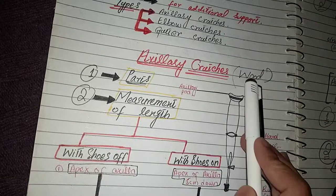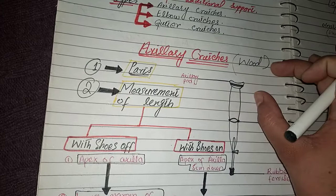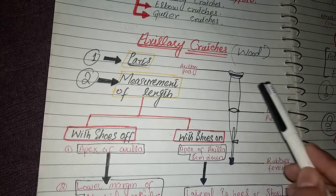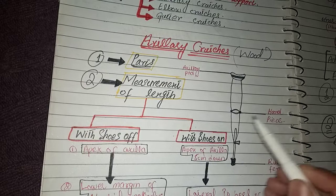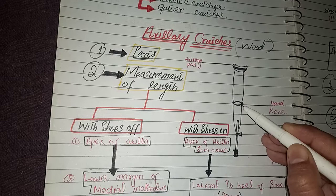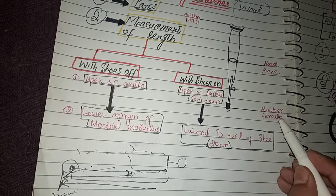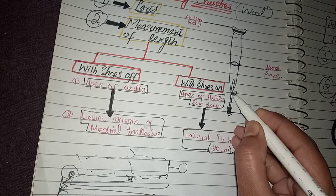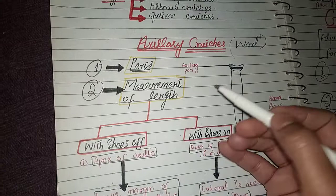First we learn about axillary crutches. Axillary crutches are made of wood. There are different parts of axillary crutches. At the top there is an axillary pad, then a handpiece, and the length is adjusted through this handpiece. There is a metal clip, and at the end there is a rubber ferrule. The length is also adjusted from here, as there are small holes through which the length is set.